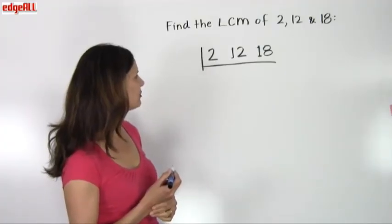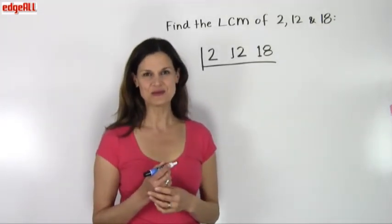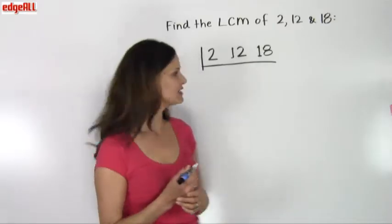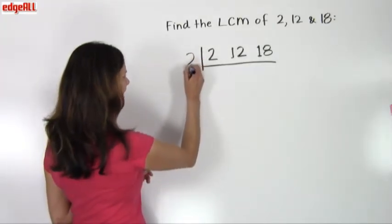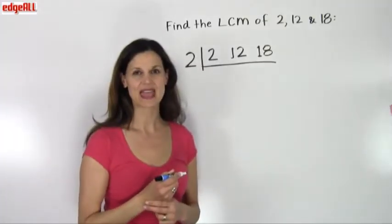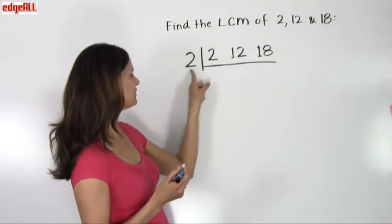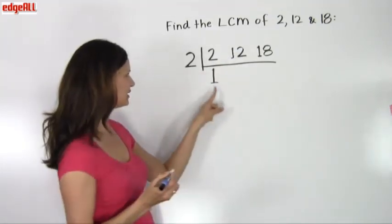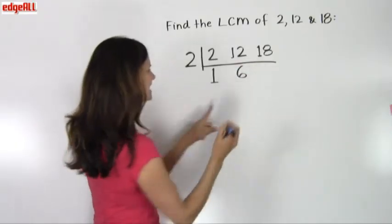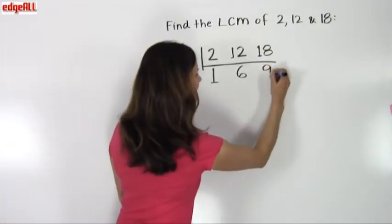So in this problem, I look at my 2, my 12, and my 18, and I see that I do have a number greater than 1 that evenly divides all three numbers — and that number is 2. I take the 2 and place it outside to the left of the L shape; you can think of that as the beginning of a ladder. Then I divide each number by 2: 2 divided by 2 equals 1, 12 divided by 2 equals 6, and 18 divided by 2 equals 9, and I place those results below.